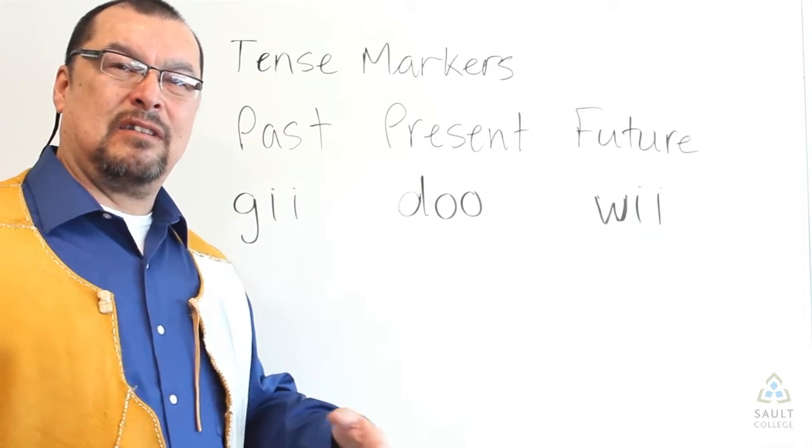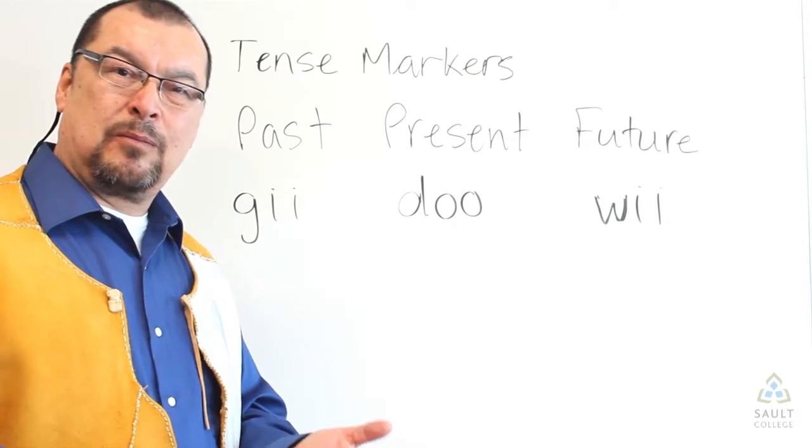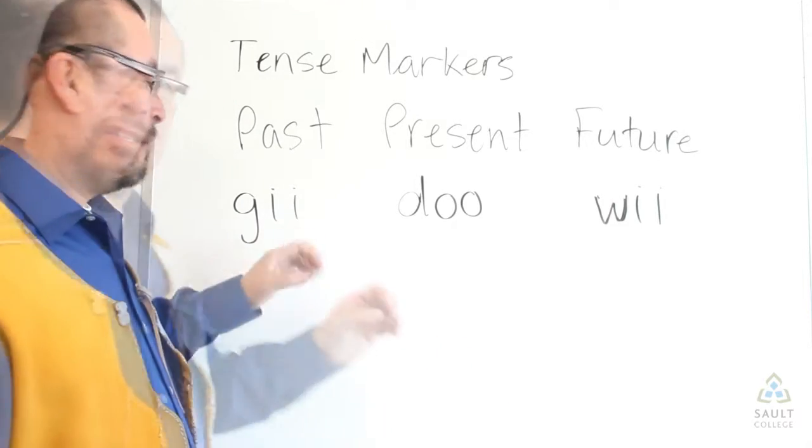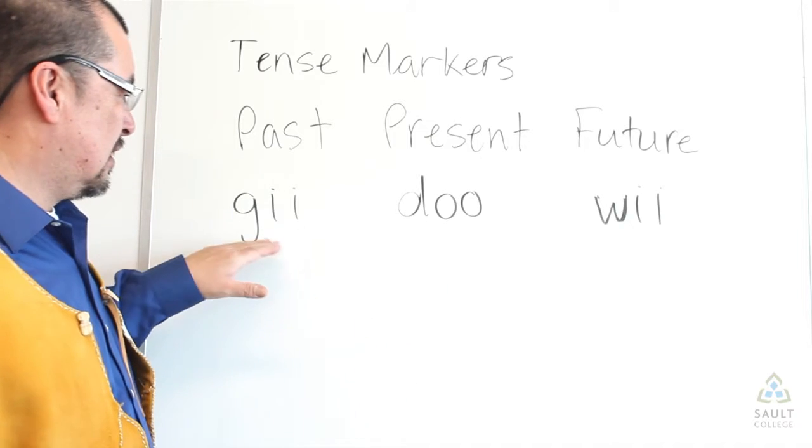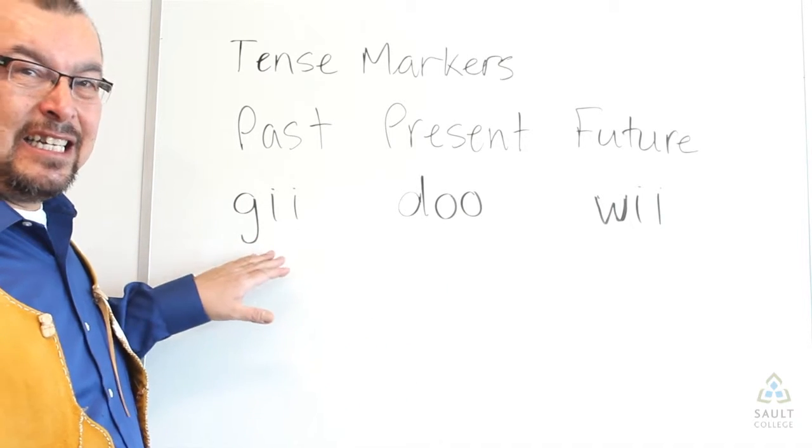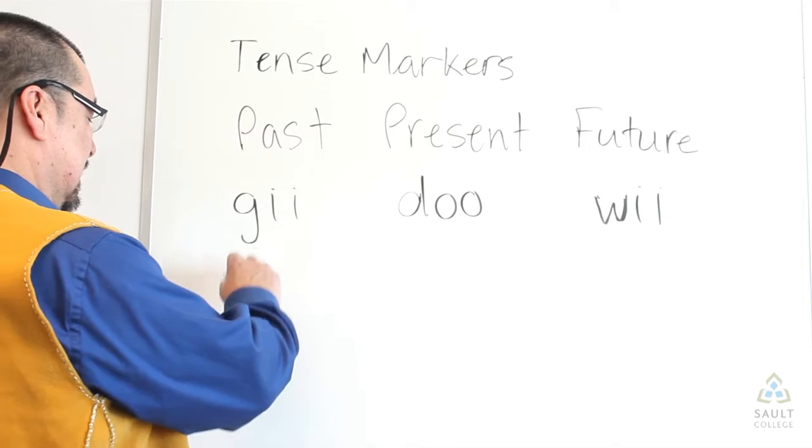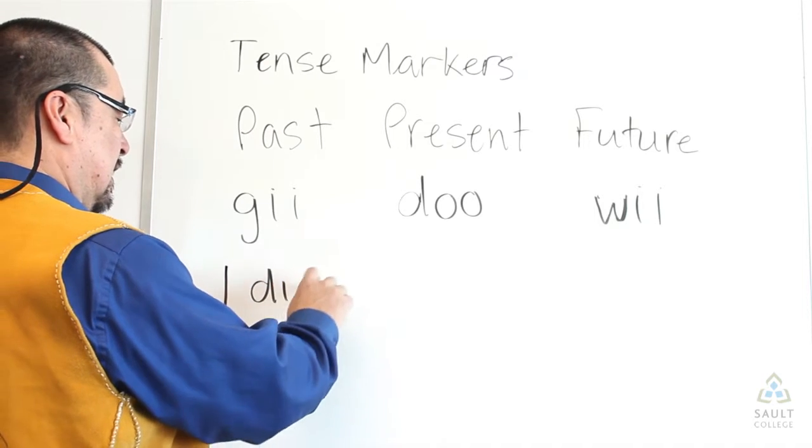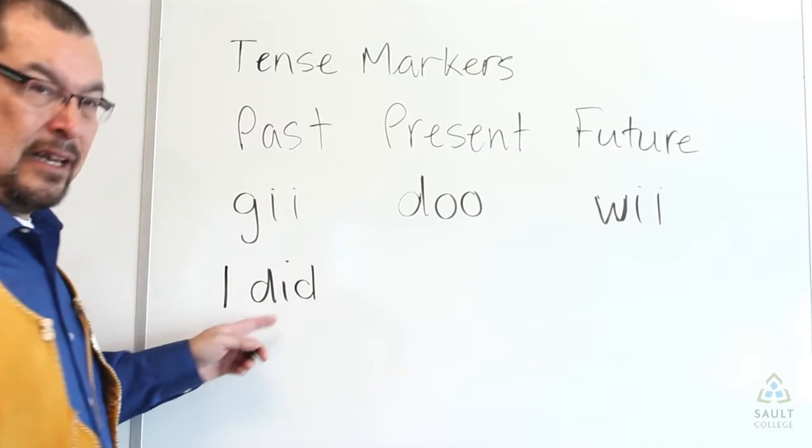In English class you learn about first person, second person, third person, that sort of thing. Well when we talk about something in the past we use this little word here, gi. Gi means sort of like I did. Keep that in mind.